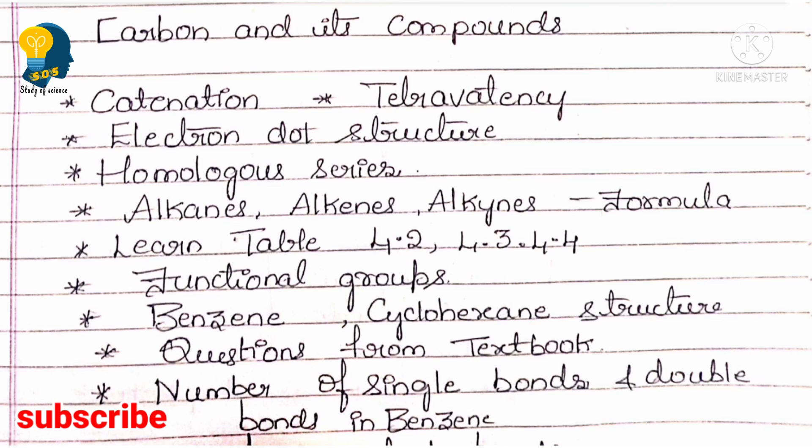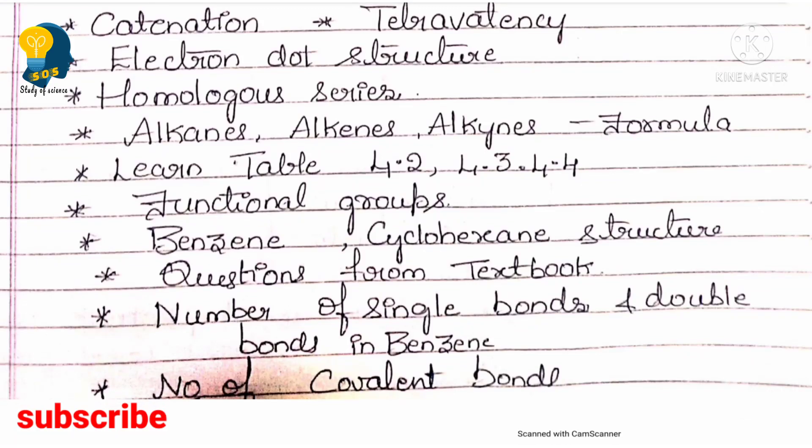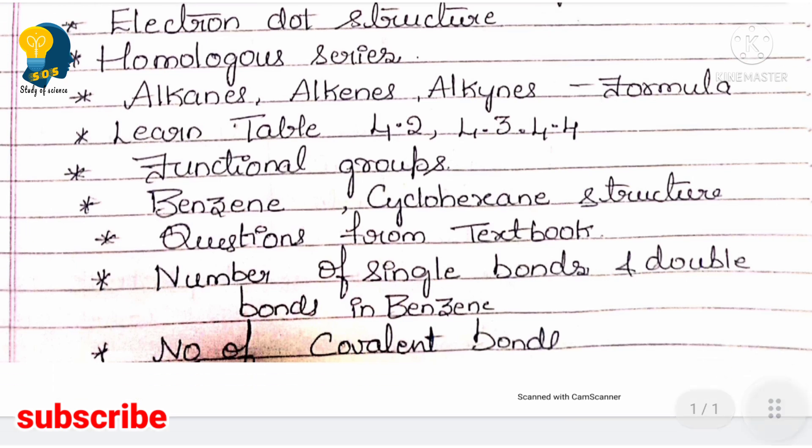You should know the benzene structure — how many single bonds and double bonds are present in benzene — and also the cyclohexane structure. You should also learn how to identify the number of covalent bonds present in a given compound's structure. They may ask how many covalent bonds are present — whether 5, 6, or 7 bonds — so know how to count them.